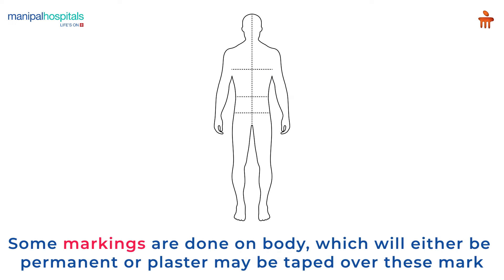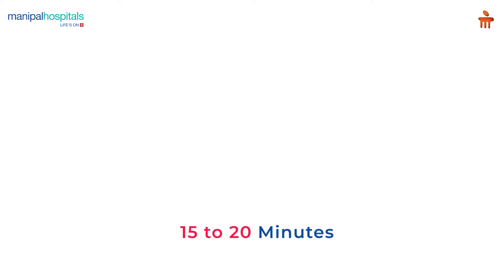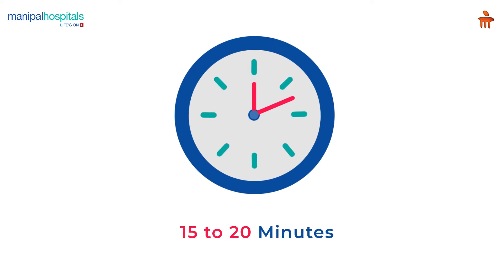Some markings are done on your body, which will either be permanent or plaster may be taped over these marks, and you will be asked to retain them until the treatment is complete. Head and neck cancer patients undergo thermoplastic cast preparation where a soft plastic material is placed on the patient's face or head and is kept still for 15-20 minutes till it dries and becomes harder.